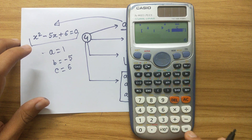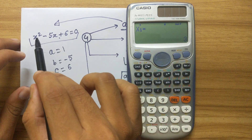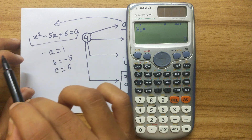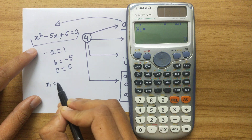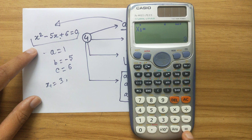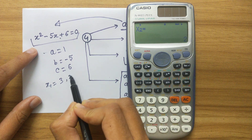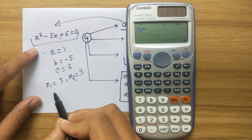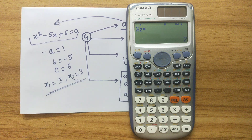With all values set, press equals again and you will see X1. Since the highest power is 2, we get two solutions. X1 equals 3. Press equals again and X2 equals 2. Those are our two solutions for this quadratic equation.